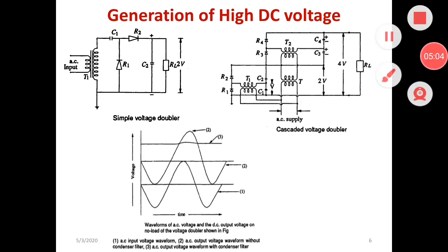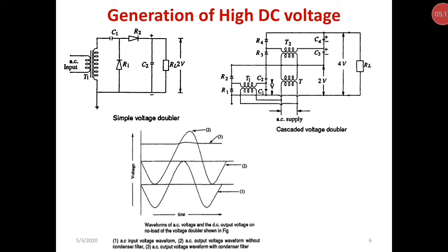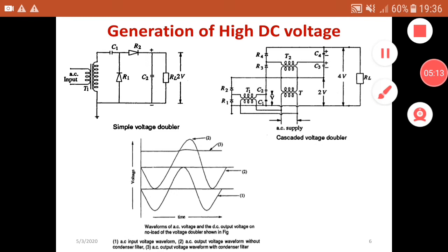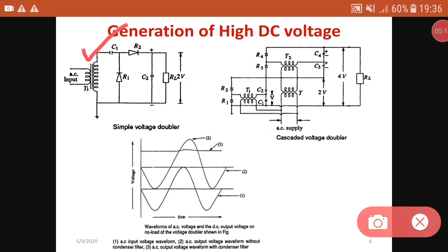In the voltage doubler circuit, capacitors are used and the output of this circuit will be double the input voltage. During one half cycle, capacitor C1 is charged up to V maximum and this voltage is added to the output, so the output voltage equals V plus V, which is 2V. The second figure is a cascaded voltage doubler circuit whose output is also double the input voltage, and it can also be used for high DC voltage generation.